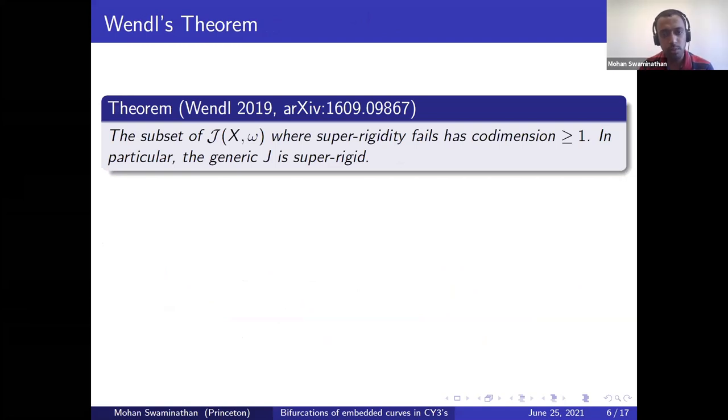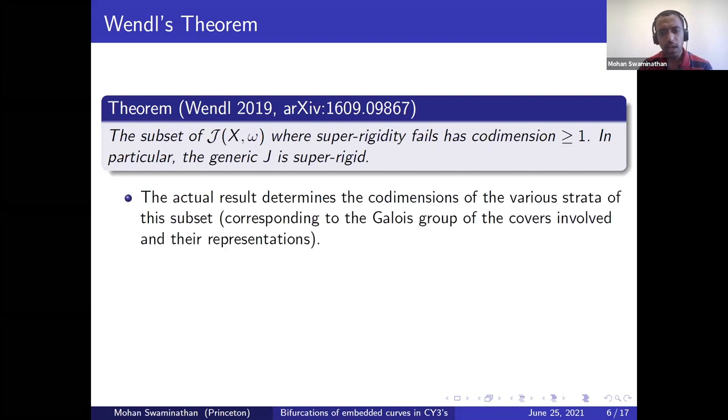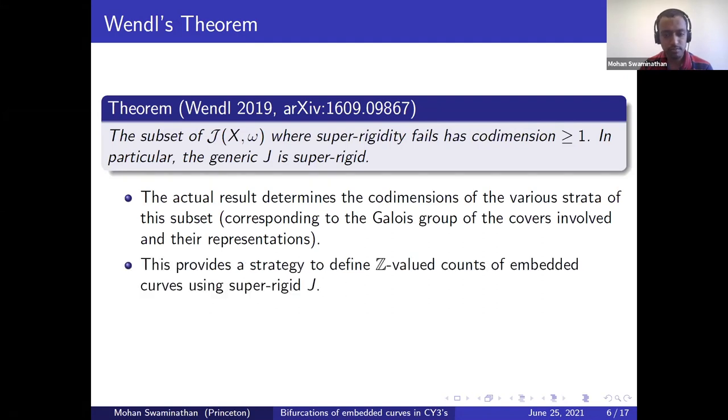Wendl's breakthrough theorem from 2019 actually shows that super rigidity is generic. More precisely, it shows that the subset of the space of almost complex structures compatible with omega, where super rigidity fails, has codimension at least one. So in particular, the complement consists of a set of Baire second category. So the generic J is super rigid. For simplicity, I'm not stating the full version of Wendl's result, but the full version actually determines a stratification on this subset and determines the codimensions of the various strata. These strata are classified by what multiple covers super rigidity fails at, and then these covers are further classified by their Galois group.